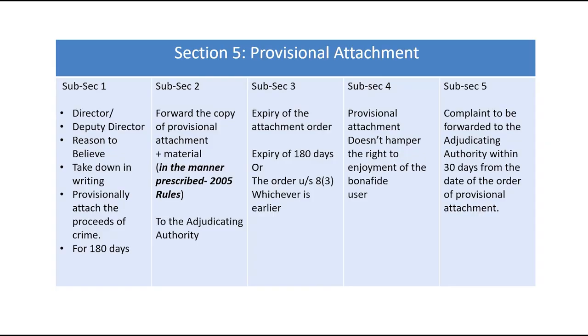Subsection 4 says provisional attachment does not hamper the right to enjoy possession. Subsection 5 provides that a complaint must be forwarded to the Adjudicating Authority within 30 days from the date of the provisional attachment order. This is the overview of Section 5; we will read each subsection one by one.